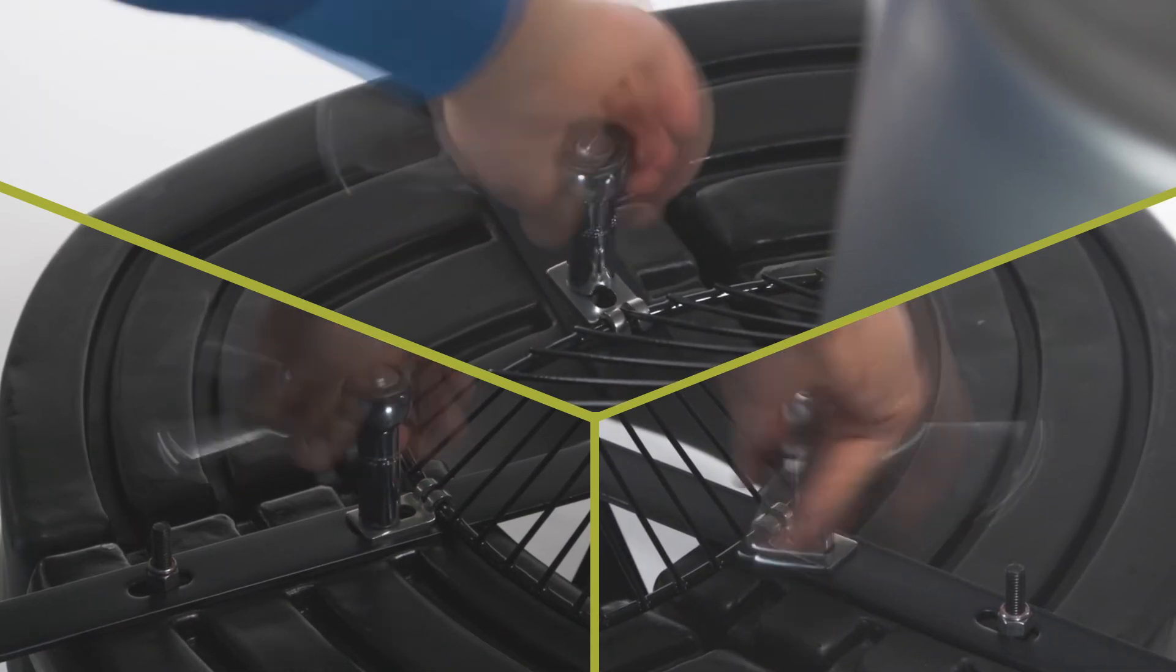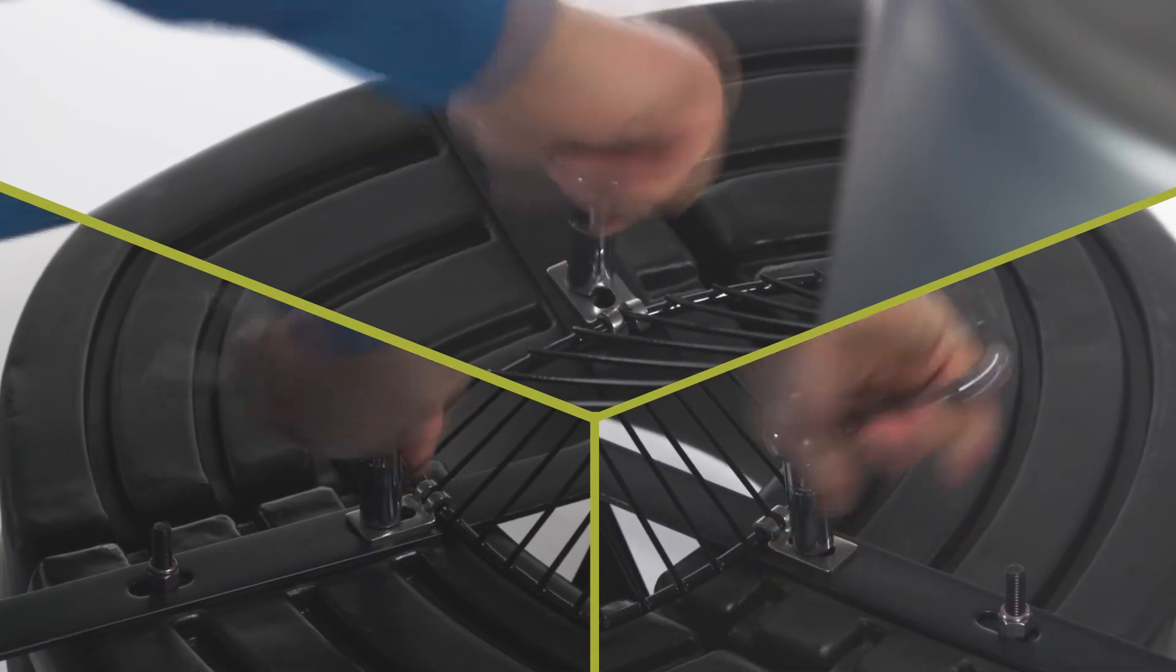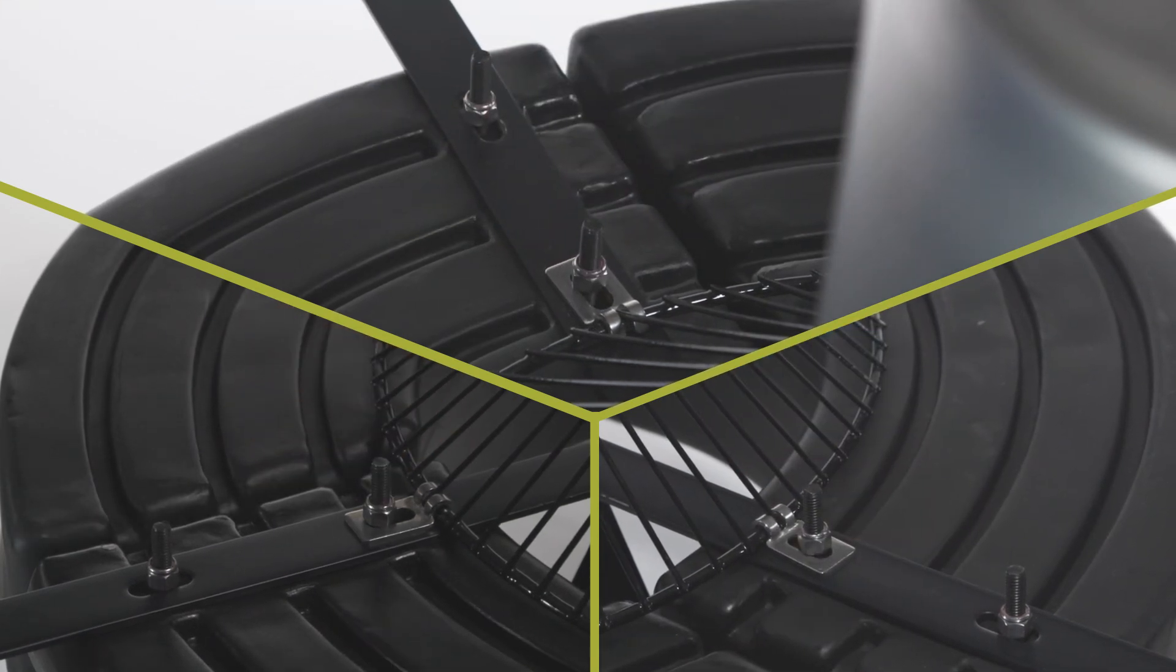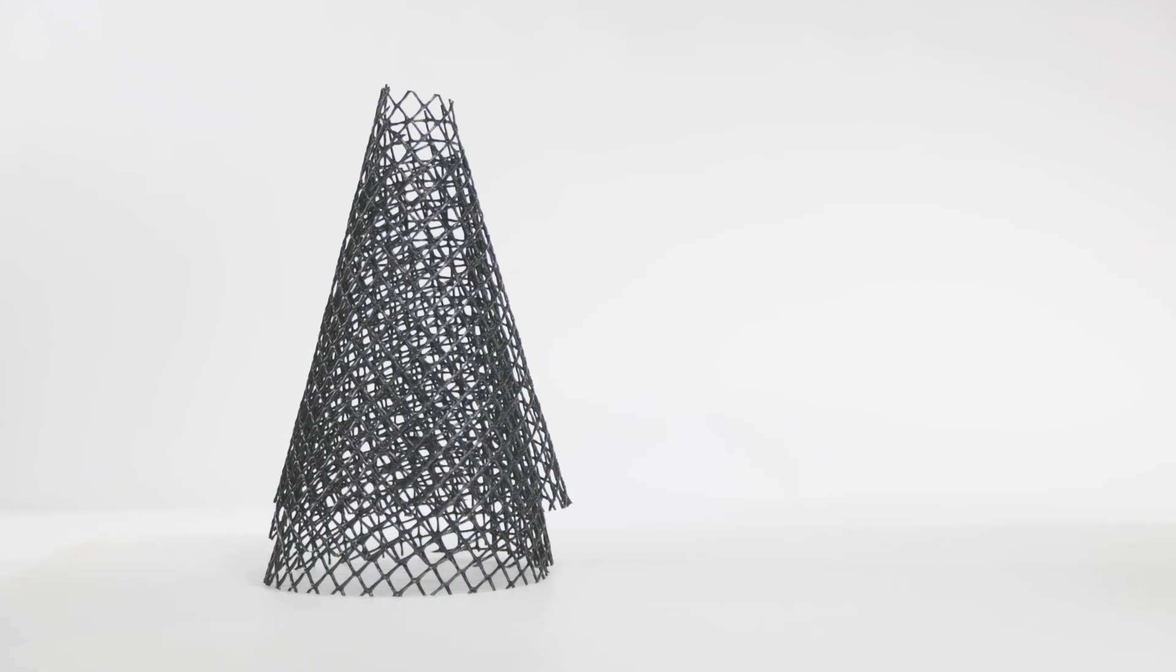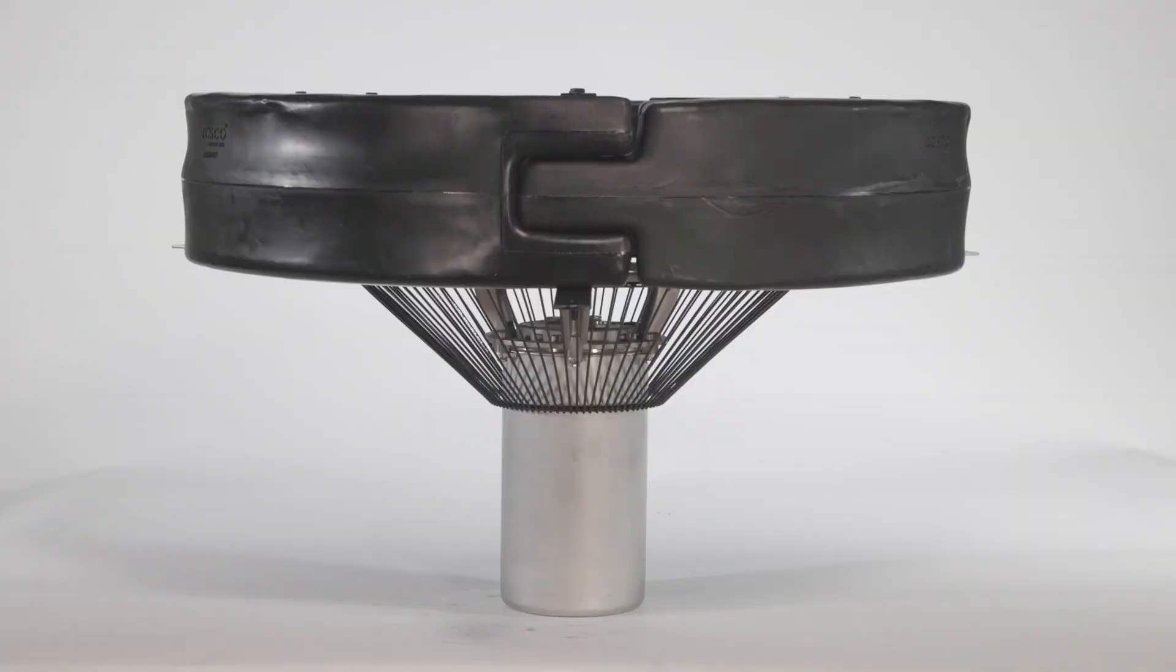Finish by tightening all of the hardware. If you wish to add the optional mesh screen, please refer to the manual for additional steps. You are now ready to install your surface aerator. Click the link in the video for additional installation instructions.